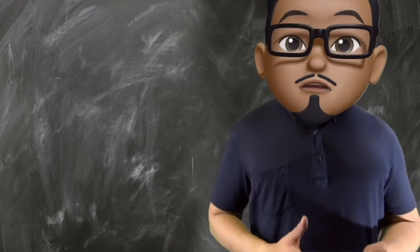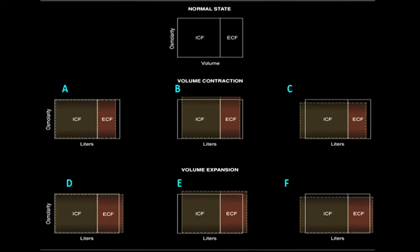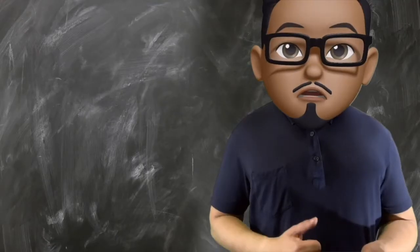These are the different Darrow-Yanet diagram relationships. As you can see, letter B is an example of pure water loss, while letter C is an example of pure sodium loss.